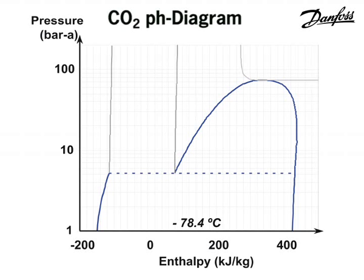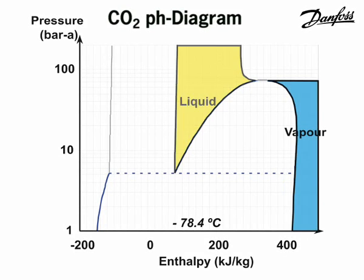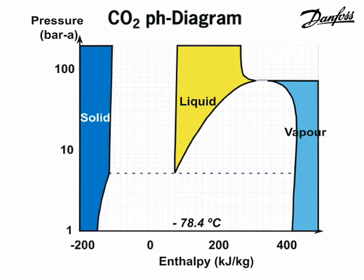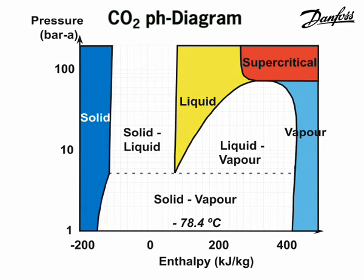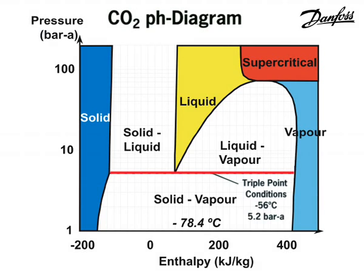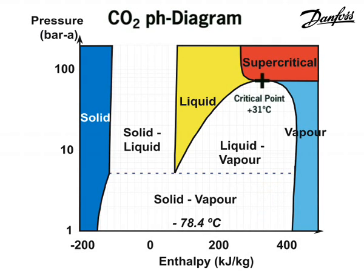For refrigeration purposes, the pressure-enthalpy diagram is commonly used. For CO2 applications, this diagram has to be extended so that the solid and supercritical phases are included. The coloured areas indicate the different phases of CO2, namely vapour, liquid, solid and supercritical. The triple point is here, and the critical point is here.